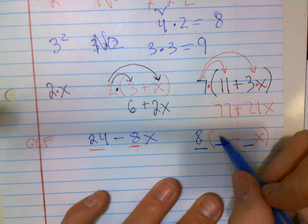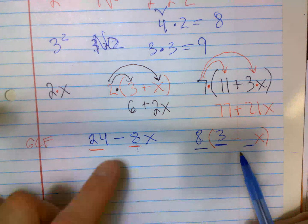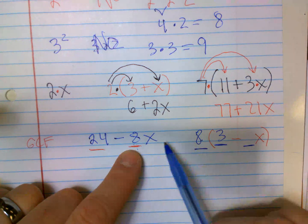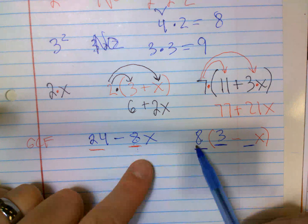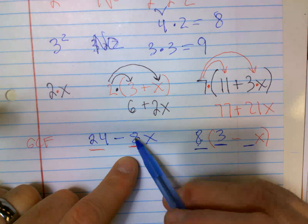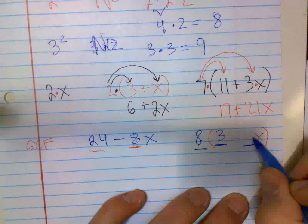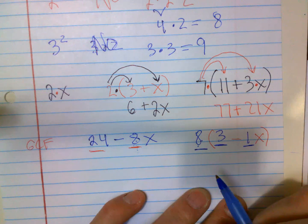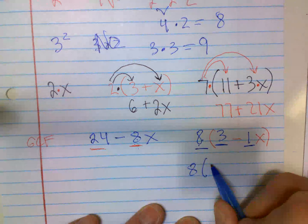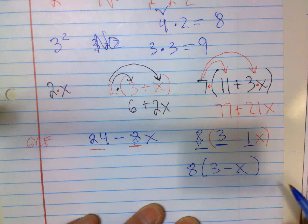So if I put the 8 out here, what times 8 equals 24? 24 divided by 8 is going to be 3. And then minus how many X's? Well, 8 divided by 1 equals 8, so 8 times 1 equals 8. So this is just going to be a 1 right here. You don't have to put the 1. It's just really going to be 8(3 - X), because that's one X, it's singular.